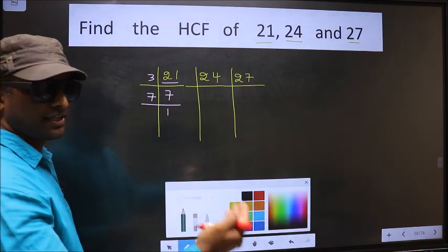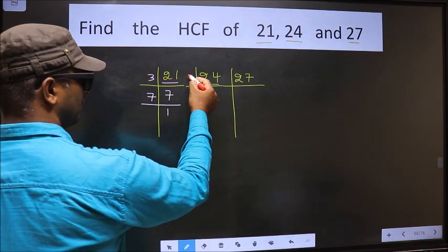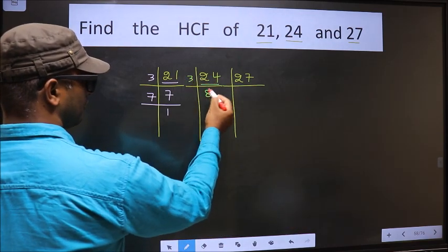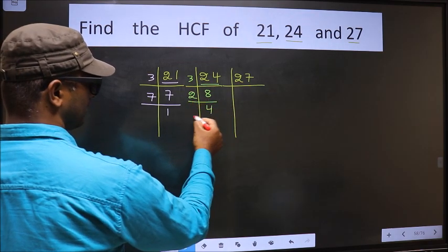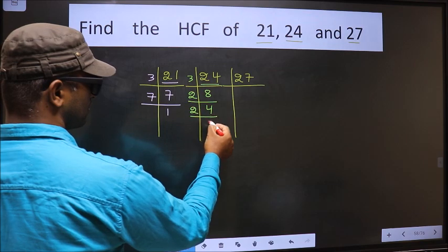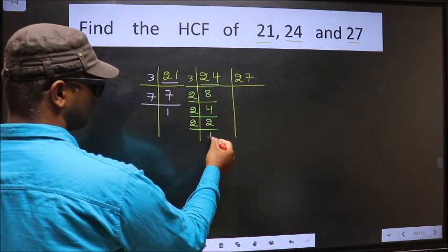Now the other number is 24. 24 is 3 times 8. Now we have 8. 8 is 2 times 4. 4 is 2 times 2. Now we have 2. 2 is a prime number, so 2 times 1 is 2.